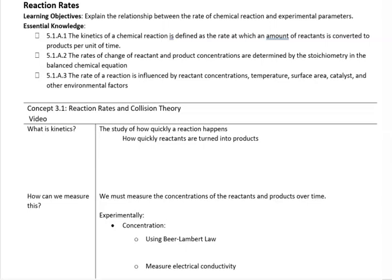Let's start talking about reaction rates. In this video, we'll explain the relationship between the rate of reaction and some experimental parameters. There are three pieces of essential knowledge. The first is that the rate of reaction is defined as how quickly the reactants are being turned into products. The second is that the rates of change of reactants and products are determined by the stoichiometry of the balanced equation. The third is that these rates are influenced by several experimental conditions including concentration, temperature, surface area, catalysts, and other environmental factors.